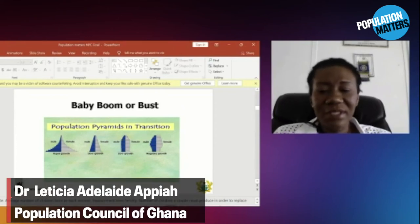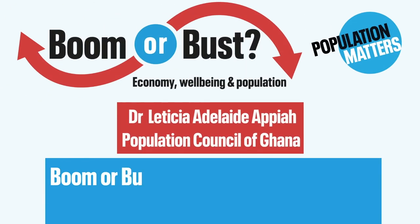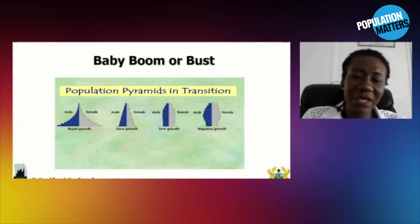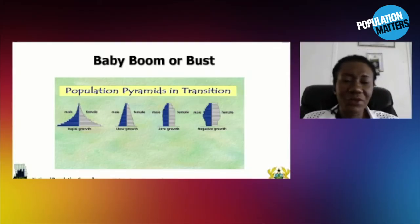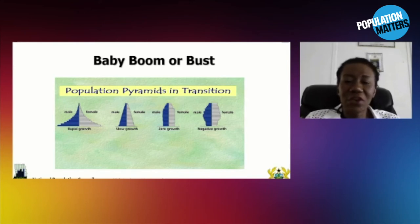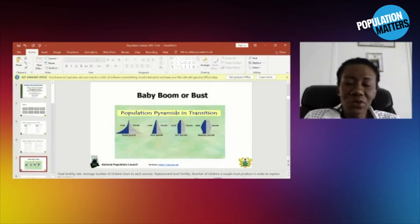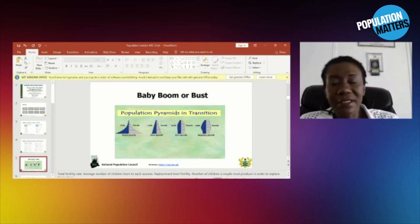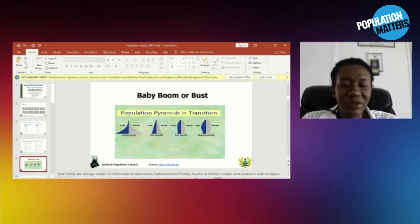Population boom or bust — what every country needs is zero population growth. High population growth rate leads to the boom, the rapid growth on the left, and negative growth on the right are both no good for any nation. We really need to slow population growth and then achieve zero population growth, because rapid population growth would hurt productivity, and negative population growth will also hurt — a population decline that does not support sustainable socioeconomic development.